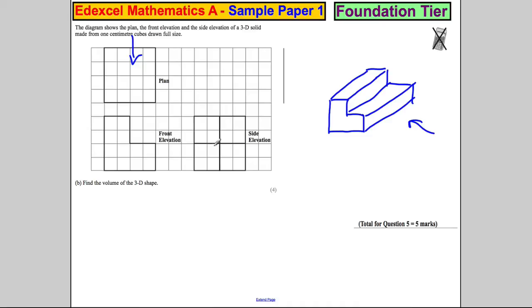So the volume formula is given in the front of your formula booklet. The volume of something like this is the area of the flat side times by the length back. So the area of this is 1, 2, 3, 4, 5, 6, 7, 8, 9, 10, 11, 12 centimeters squared.